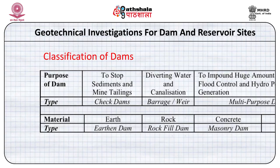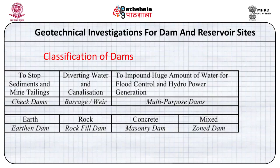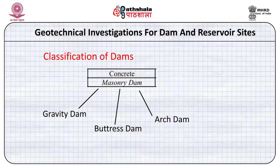In terms of materials, an earth dam uses borrowed earth, a rock fill dam uses rock rubble, and a concrete or masonry dam uses masonry or concrete. Zoned dams are made up of different materials in different zones — for example, a clay core, rocks above the clay core, and concreting above the rocks to stop seepage from the reservoir to the downstream. Concrete and masonry dams are further classified into gravity dams, buttress dams, and arch dams.